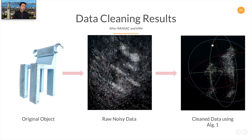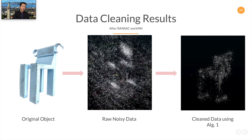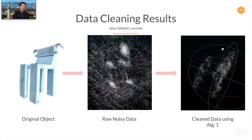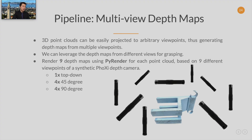The original object is on the left, the raw noisy point cloud from ARKit is in the middle, and the cleaned data is on the right. To generate depth maps from point clouds, we use PyRender to load the 3D point clouds and project them into depth maps.